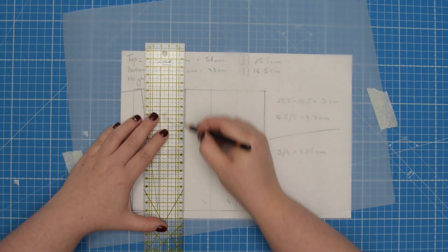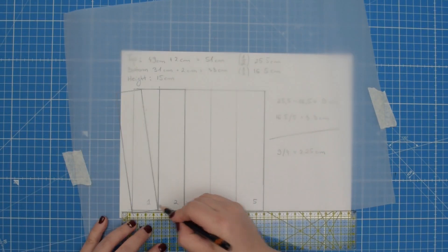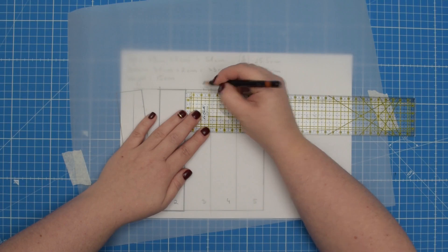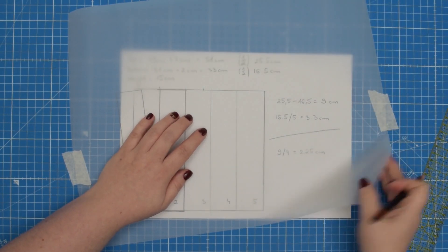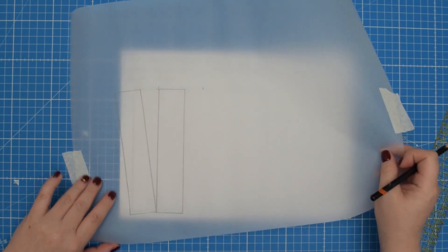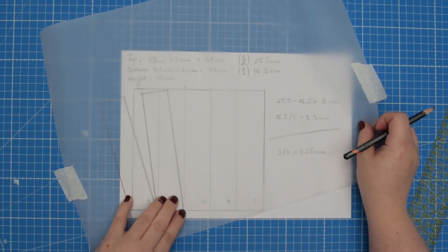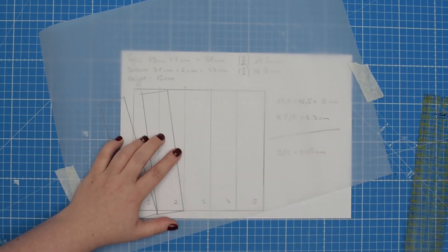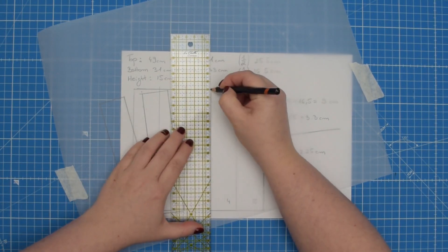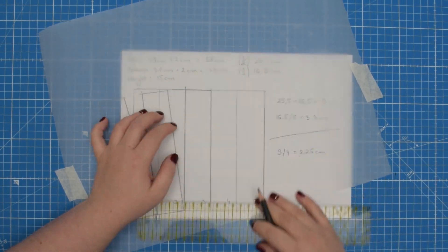Then we're going to trace the next piece. Again add the difference to the top edge. Then pivot your paper. Again keep the bottom corner as it is. Just like that. And then you're going to repeat the process until you finish tracing all pieces.